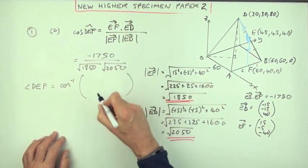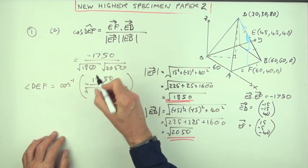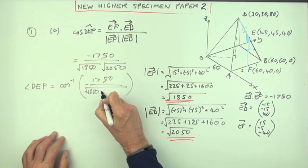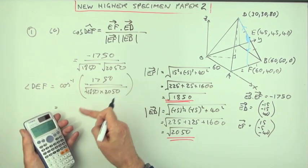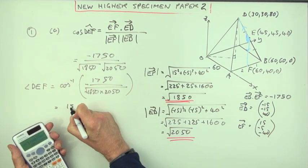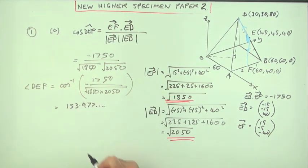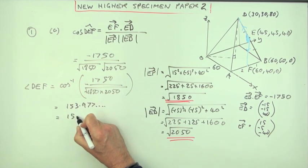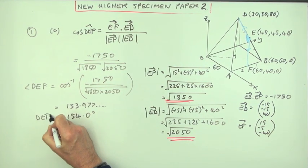We'll just get angle DEF by just doing the inverse cos of that. Inverse cos of this thing. Negative 1750 over the square root of those two numbers. 1850 times 2050. And when you type that all in, you get 153.977 and so on. So we'll call that 154.0 degrees for angle DEF.